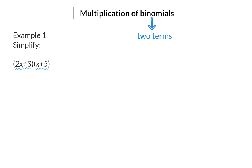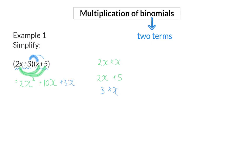The distributive law says that the 3 has to be multiplied with everything in the second bracket, but we also have to multiply the 2x with everything in the second bracket. Starting by multiplying 2x with x to get 2x squared, and then 2x with 5 to get plus 10x. Next, multiplying 3 with x gives 3x, and 3 multiplied by 5 gives the last term of 15.